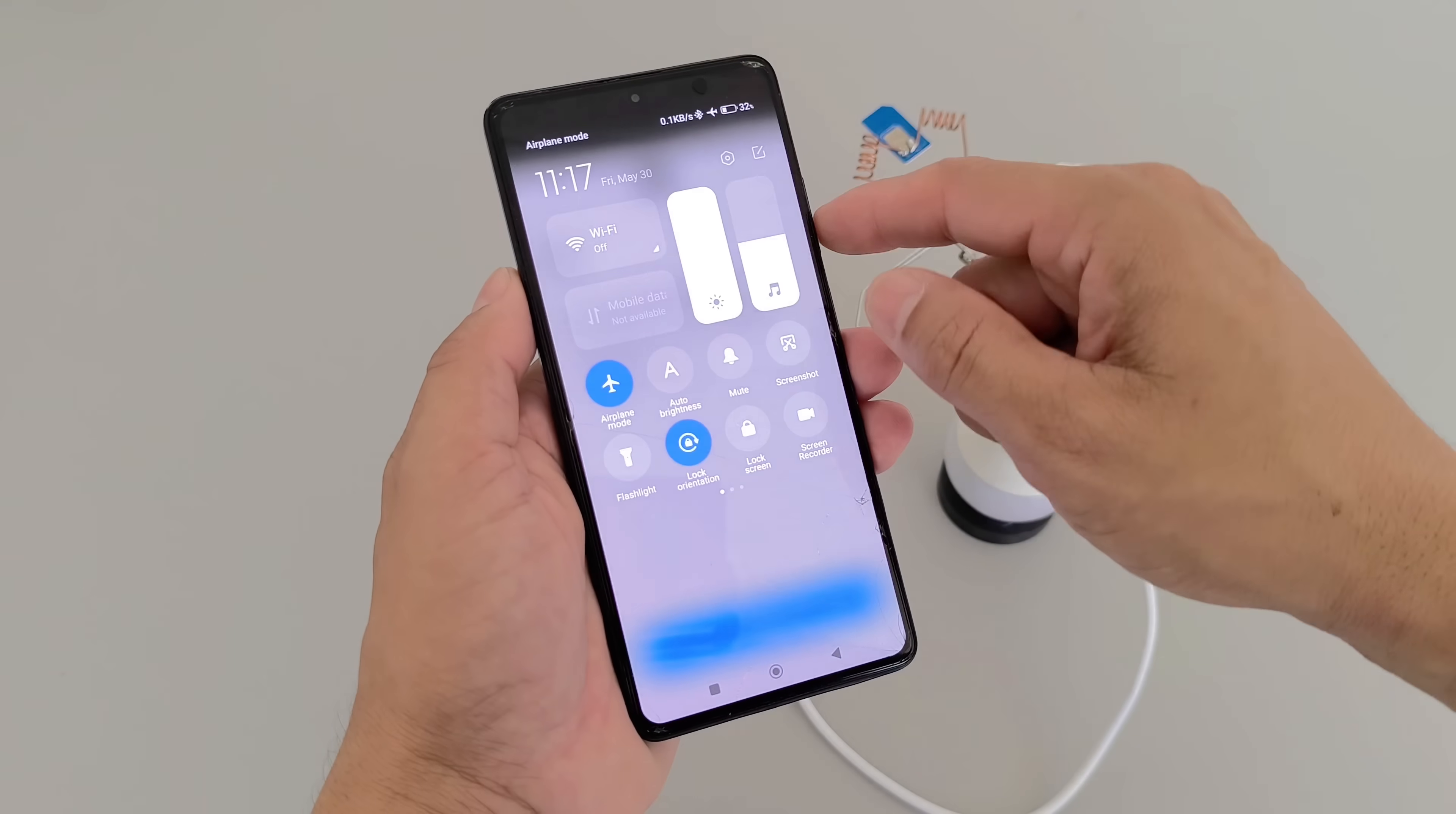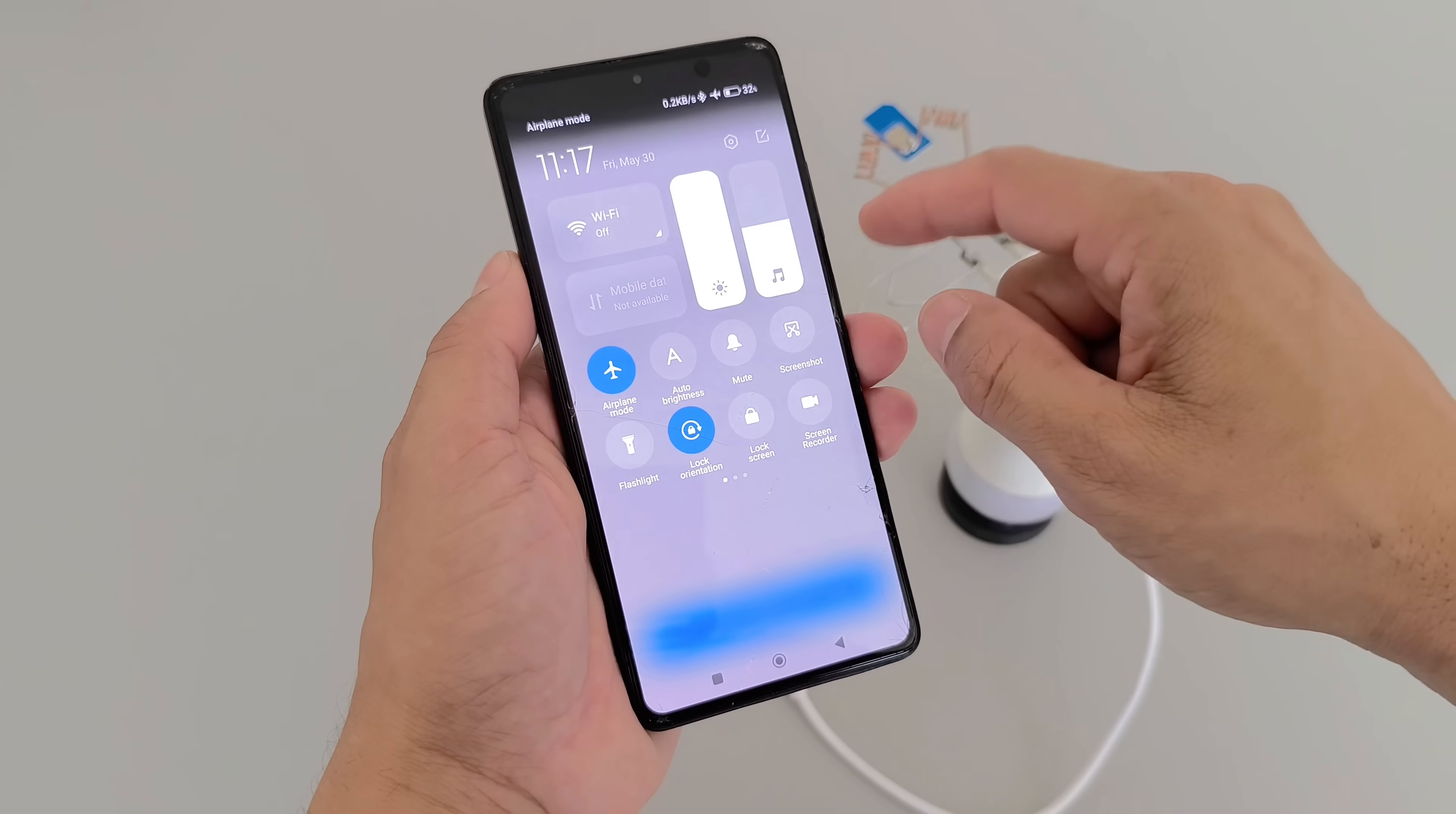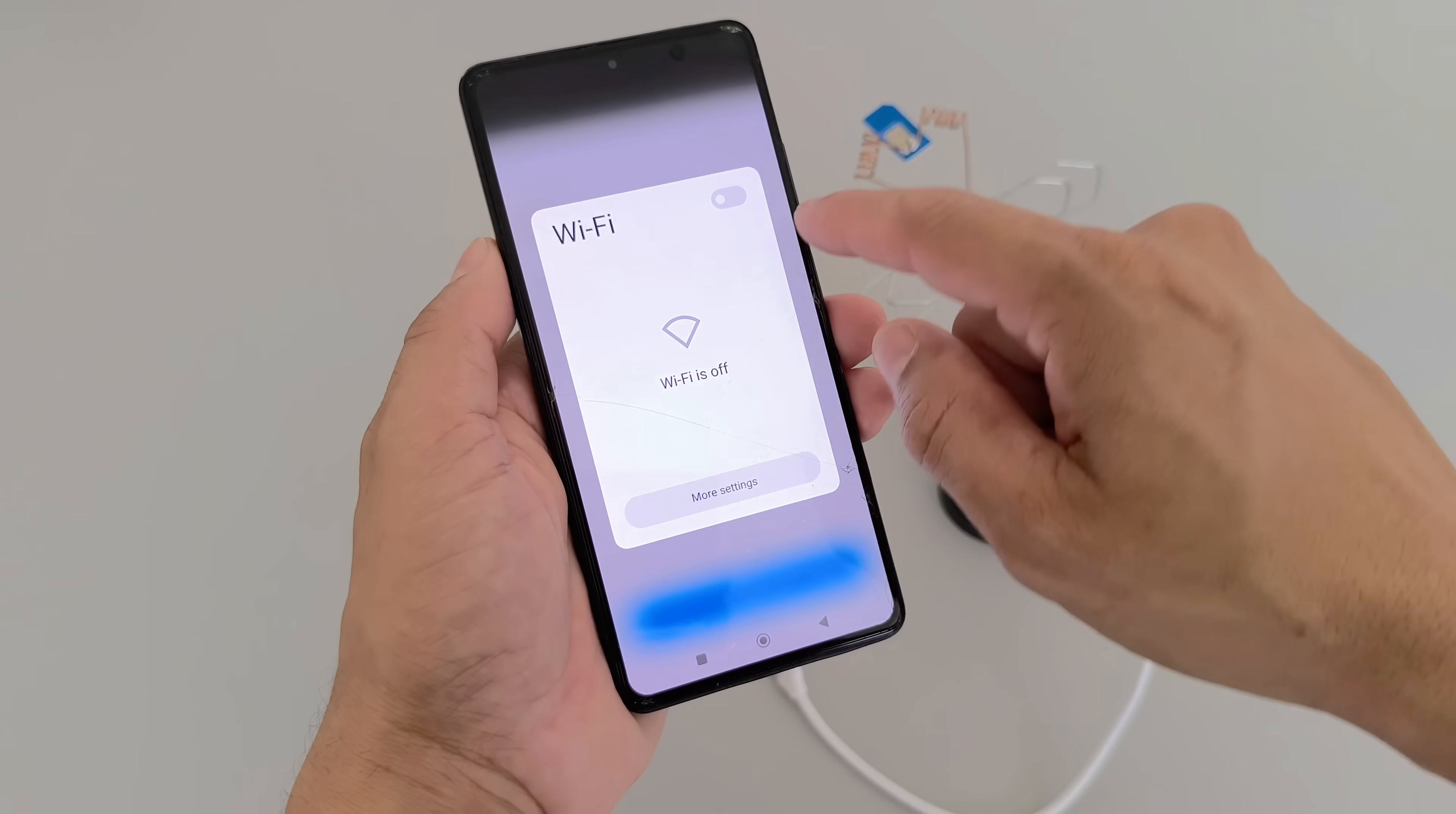To ensure even greater isolation, airplane mode has been activated, blocking even residual communication signals. Every detail has been designed to eliminate any possibility of accessing the Internet or external networks.